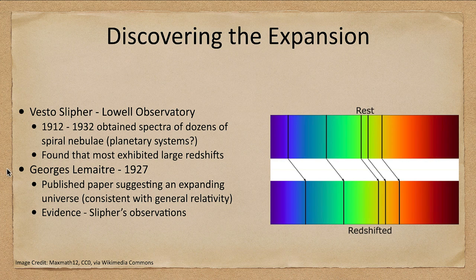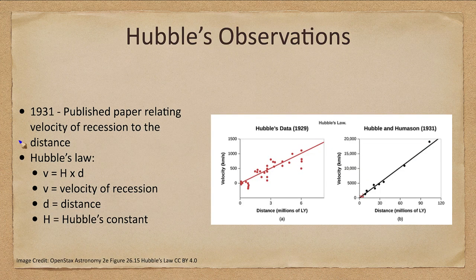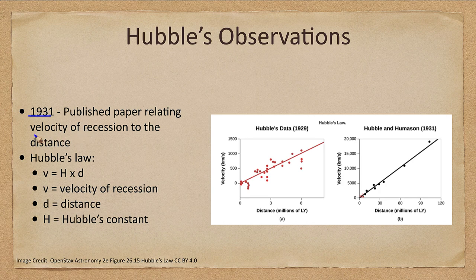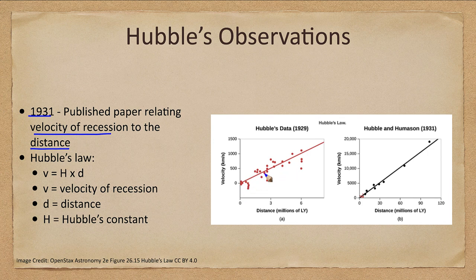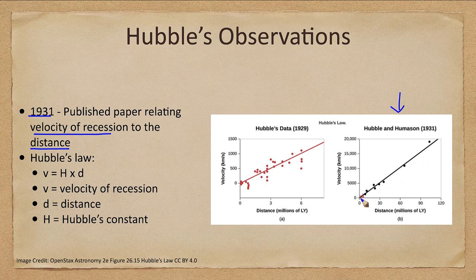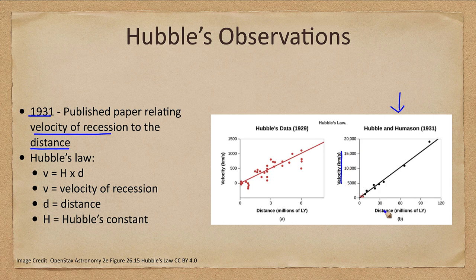This then leads us to Edwin Hubble who in 1931 published a paper relating the velocity of recession to the distance of a galaxy. His original data here shown in red were first relatively nearby galaxies going only out to about six million light years. And then later data here going out to 1931 going out to nearly a hundred million light years. They found that there's a very direct correlation between the velocity of recession and the distance of the galaxy.